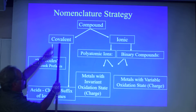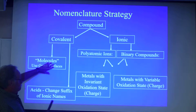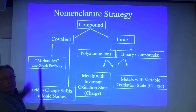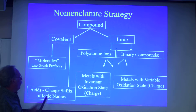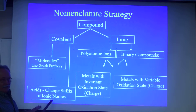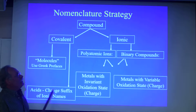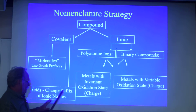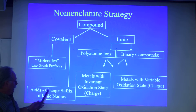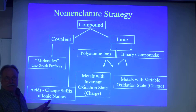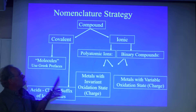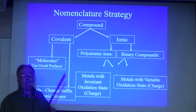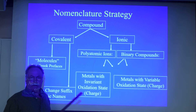If it's a covalent compound, you ask yourself: is it a simple molecule, in which case we have a set of rules that involve Greek prefixes, or is it an acid? If it's an acid, we change the ending of the salts that are associated with the acid, and that's how we name the acids. And this is the strategy that you will use as you go through the next part of this chapter.